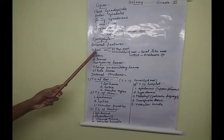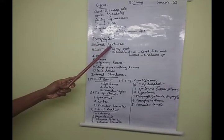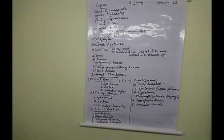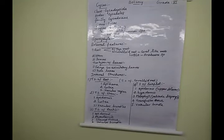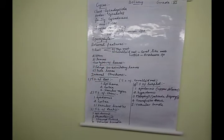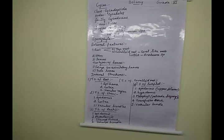Now we are going to learn about the external characteristic features of the root system. The Cycas plant has two types of roots: one is tap root and another one is coralloid root. The tap root means the primary root that persists, forming the tap root system — that is the normal thing.